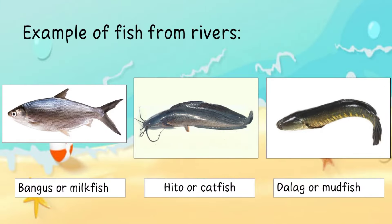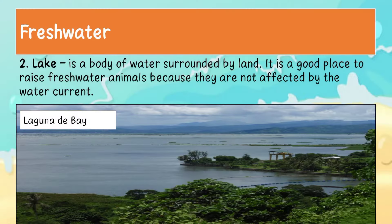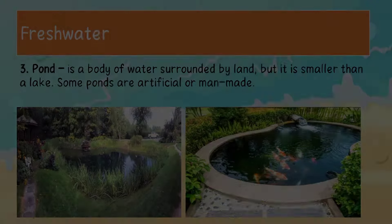Examples of fish from rivers: bangus or milkfish, hito or catfish, and dalag or mudfish. A lake is a body of water surrounded by land. It is a good place to raise freshwater animals because they are not affected by the water current.